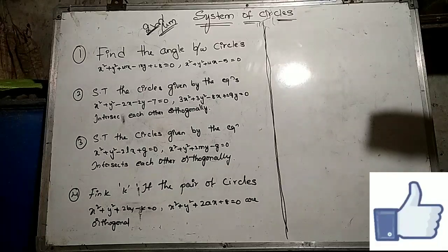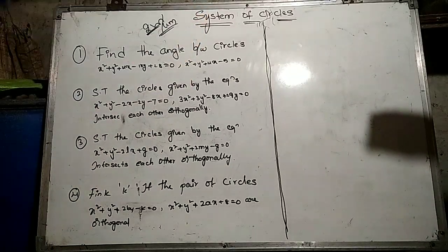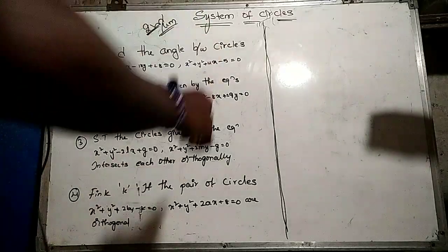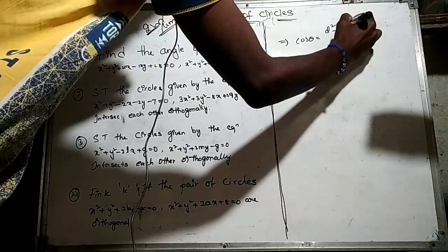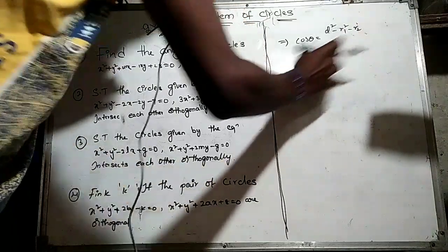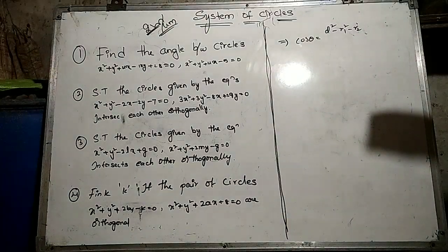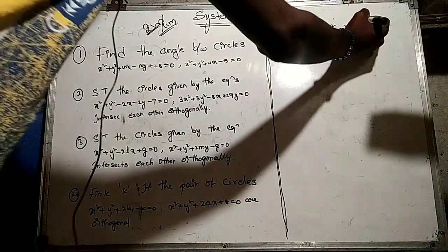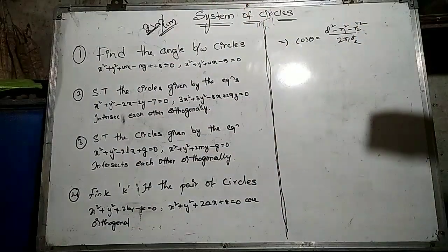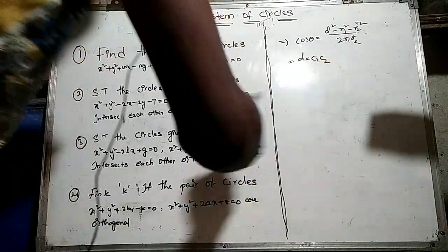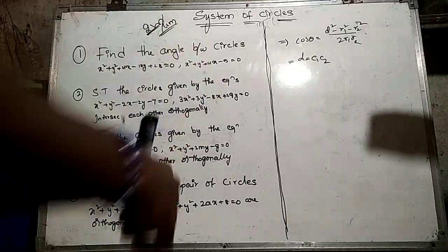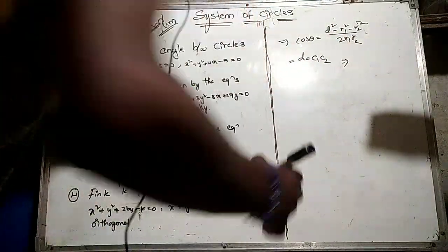I will ask the angle between the two circles using formula-based questions. The formula is: cos theta is equal to d squared minus r1 squared minus r2 squared by 2 r1 into r2. This is the angle between the two circles formula. Here, d means the distance between the two centers — the first circle center and the second circle center.